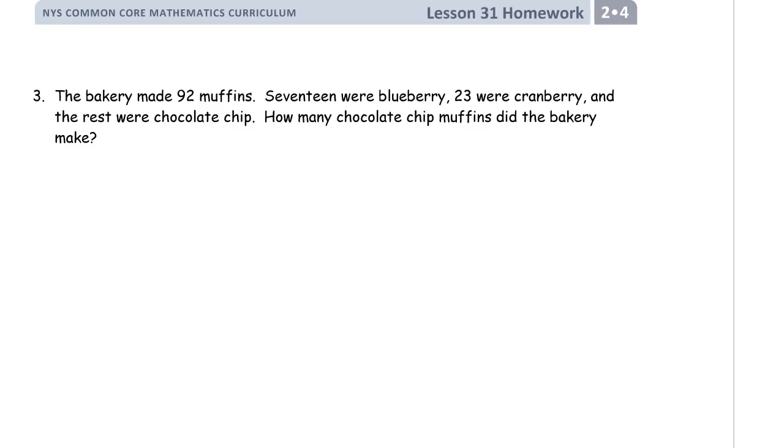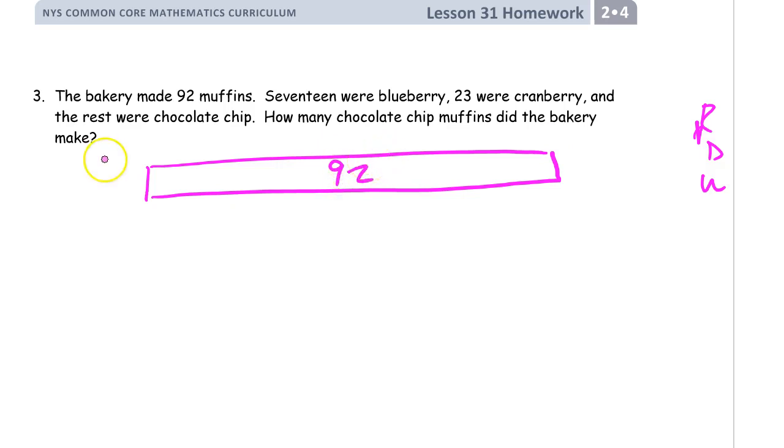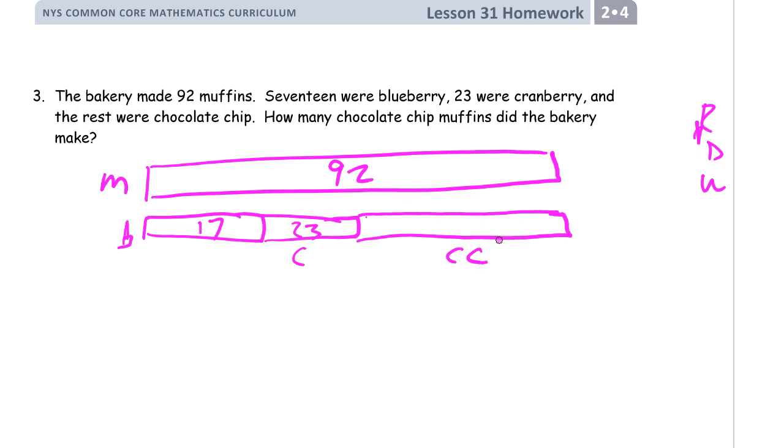Next page. The bakery made 92 muffins. 17 were blueberry, 23 were cranberry, and the rest were chocolate chip. How many chocolate chip muffins did the bakery make? Alright, so we read it. We're going to draw it. We'll write an equation and an answer statement. So we have 92 muffins, and then we're going to figure out all the different kinds. And these are just M for muffins. So now we know something about some of these. 17 are blueberry. 23 are cranberry, and all the rest are chocolate chip. That's what we have to figure out.